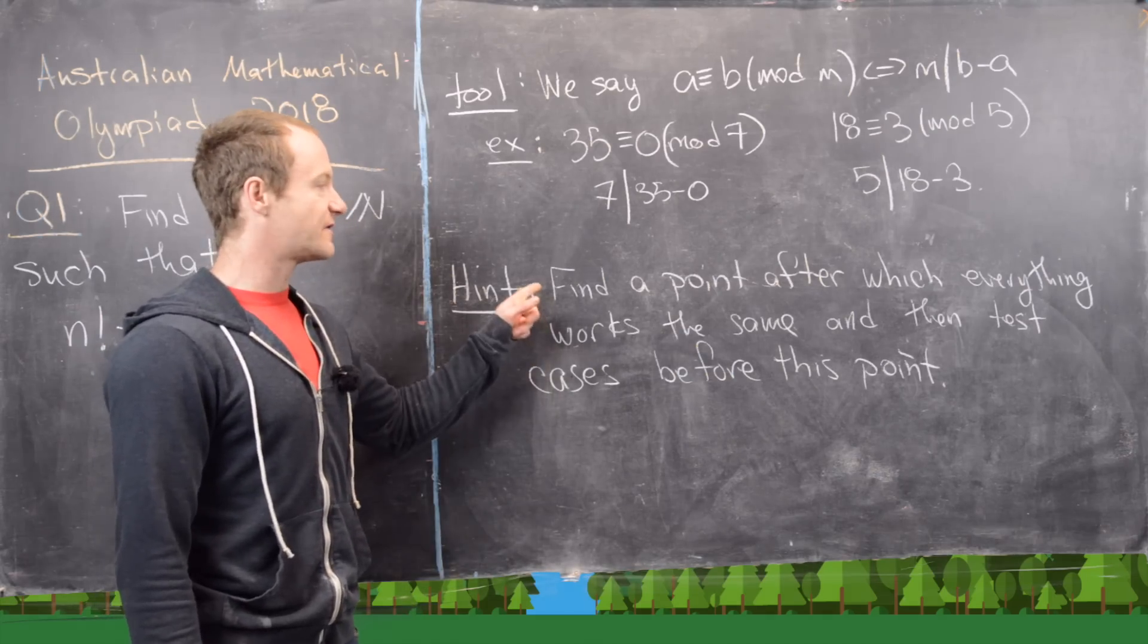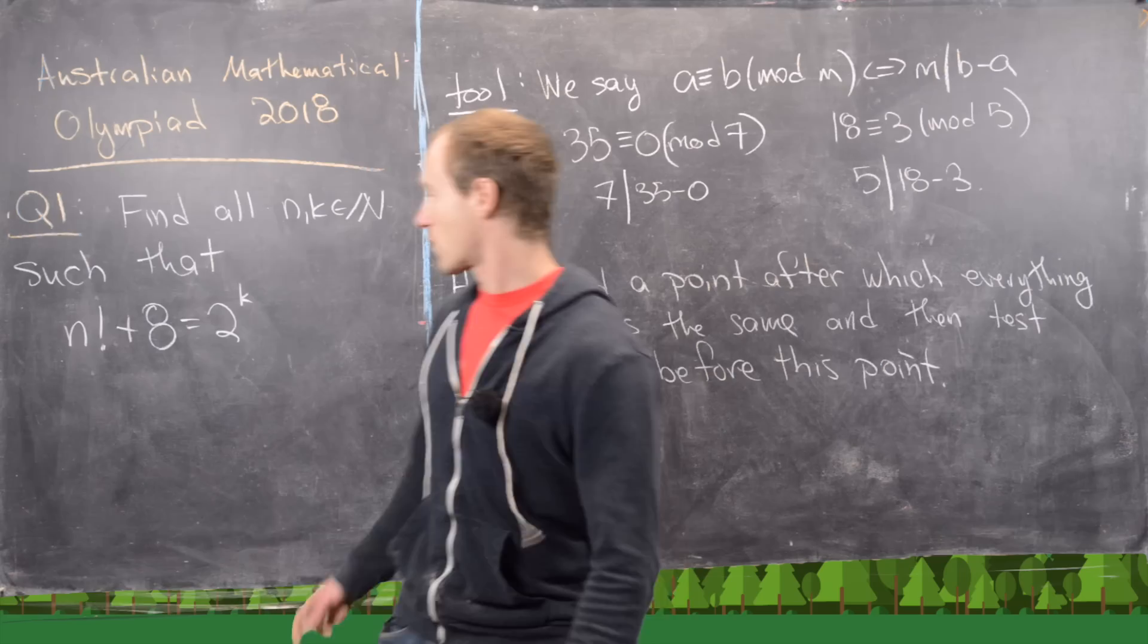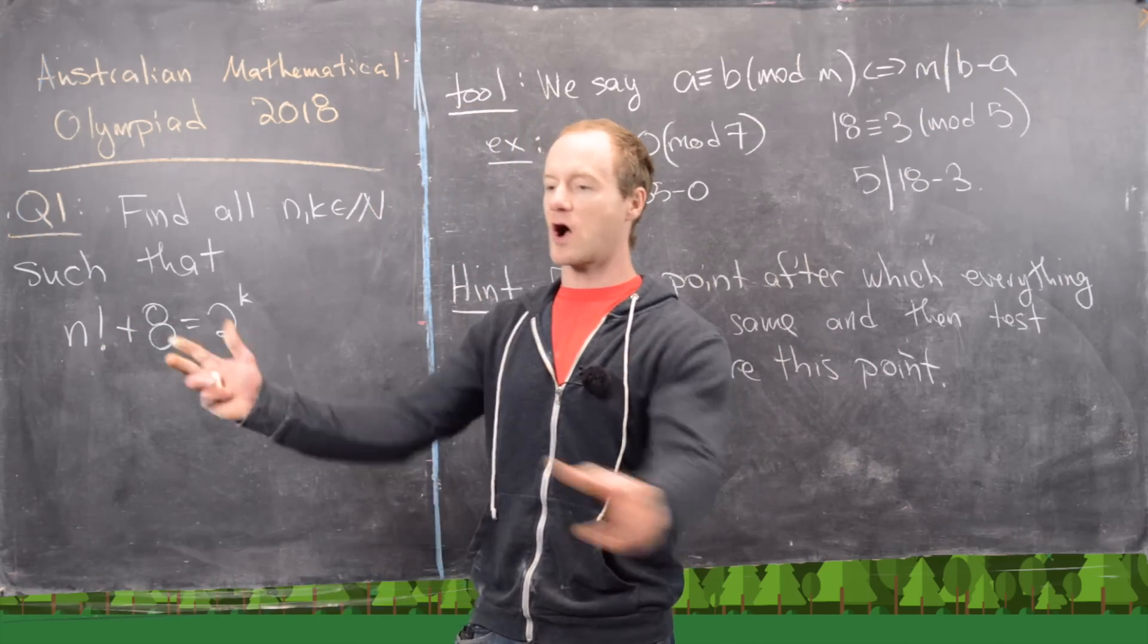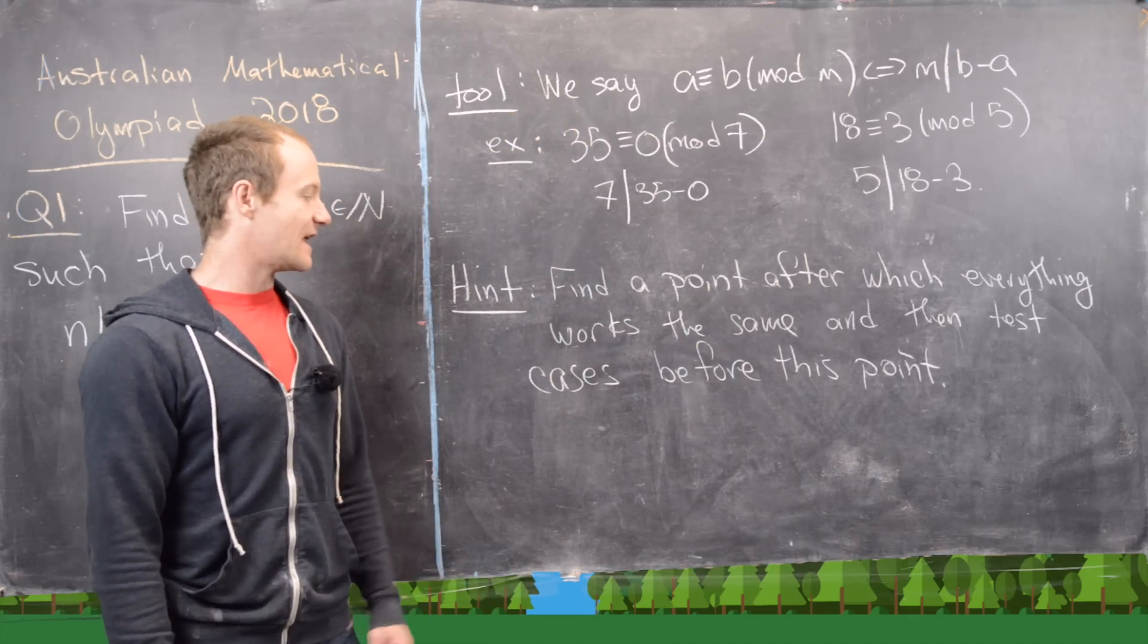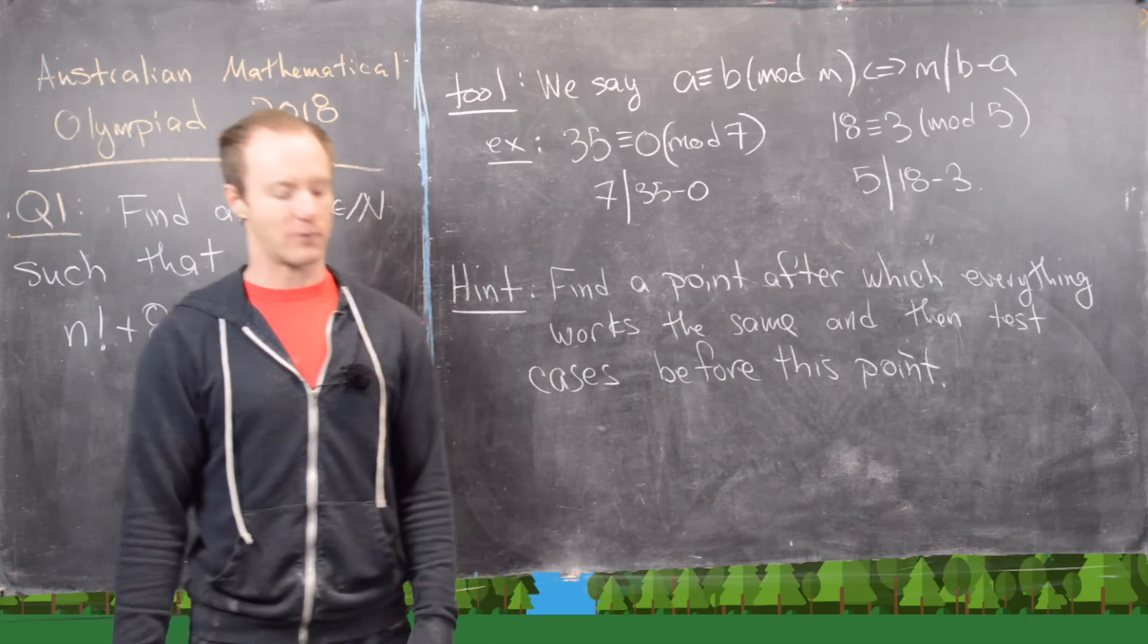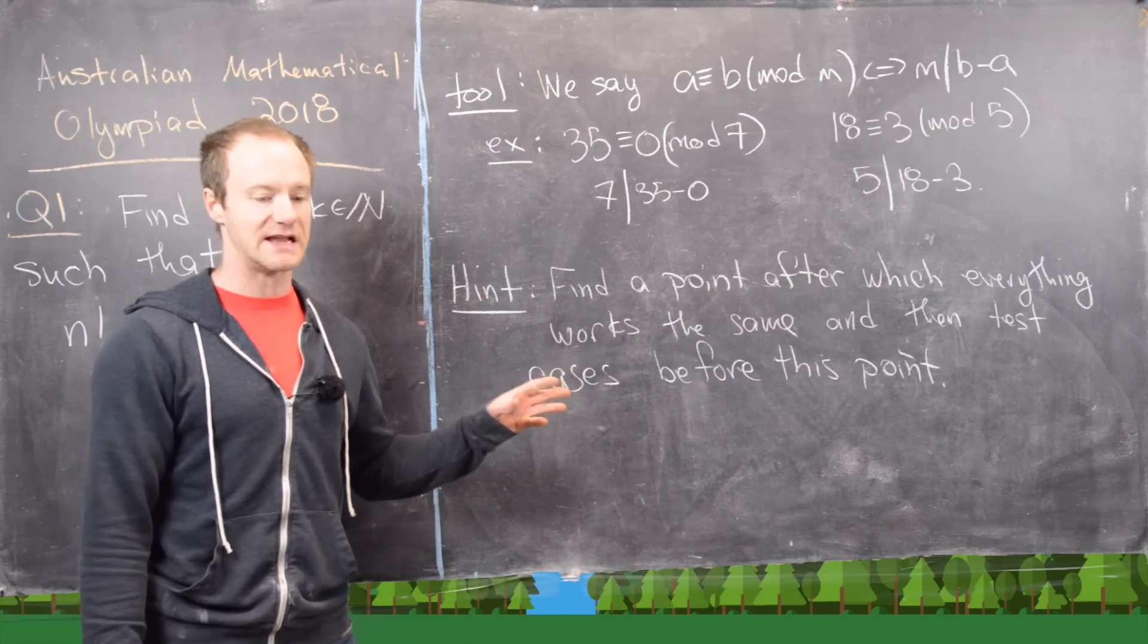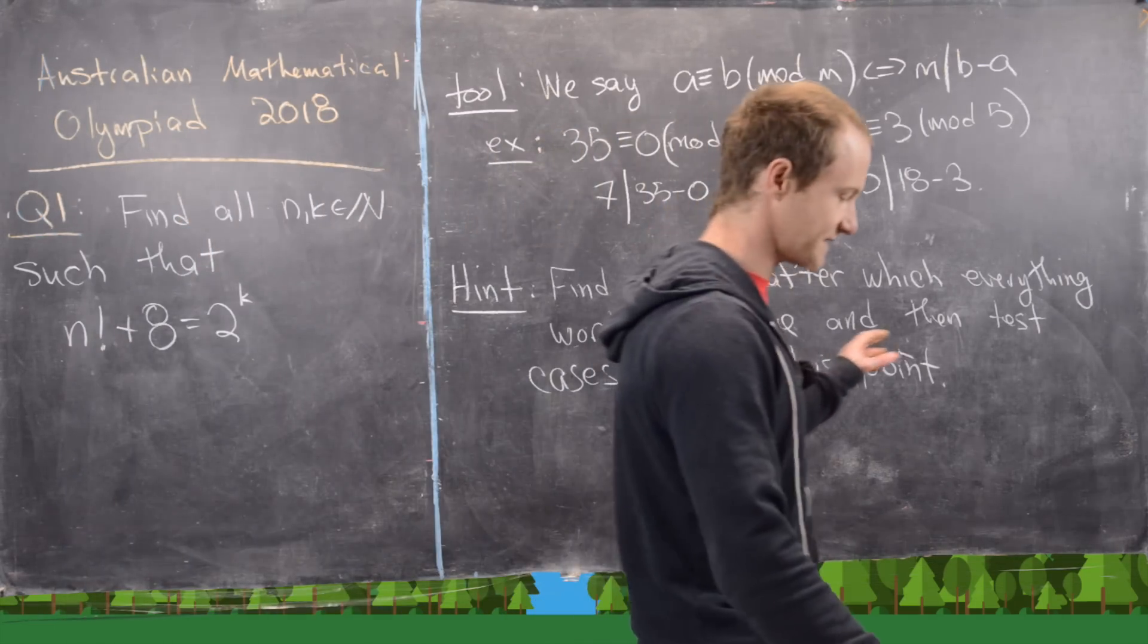And the hint is we want to find a point after which everything works the same. So in other words, some n value after which we can say a broad generalization for everything after that n value, and then test the cases before that point. So this is a pretty big hint because that tells us that there won't be many cases before that point.